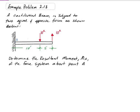The two 10 kip forces are what we call a couple. A couple is when you have two forces that are equal in magnitude and opposite in direction, and they must be parallel.